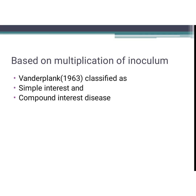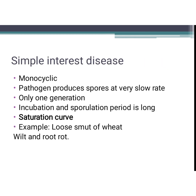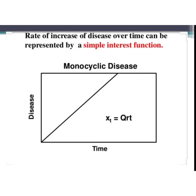Classification based on multiplication of inoculum was given by Vanderplank in 1963 — he is the father of epidemiology. He classified diseases as simple interest and compound interest diseases. Simple interest disease is mathematically analogous to simple interest in money. It is caused by a monocyclic pathogen with a low birth rate and only one generation. The pathogen produces spores at a very slow rate, incubation and sporulation period is long, and the curve is a saturation curve. Take note of the examples and the saturation curve shown in the picture.